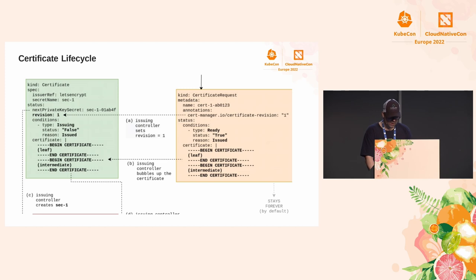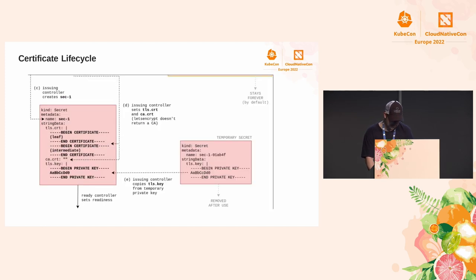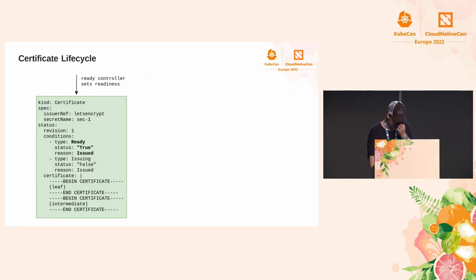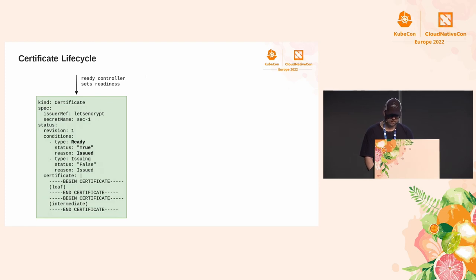Once the certificate request has been fulfilled, the information is copied into the Certificate object by cert-manager. In the last step, the controller sets the public key and copies the private key from the temporary secret object. Finally, the controller sets the Certificate object as ready with all the information. This is the summary of the process cert-manager performs at a low level.